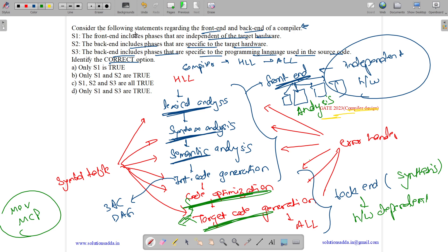So let us see the options. The front-end includes phases that are independent of the target hardware. Yes. Front-end is independent of the hardware. The backend includes the phases that are specific to the target hardware. Yes.